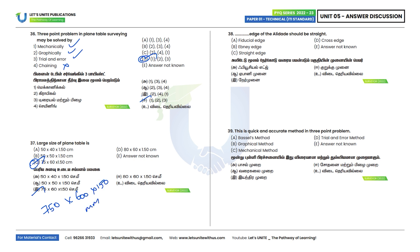Thirty-eighth question: Which edge of the alidade should be straight? The fiducial edge should be straight. Option A is the correct answer. Thirty-ninth question: What is a quick and accurate method? If we look at Lehmann's method — Lehmann's method is the quick and accurate method. Option D is the correct answer.